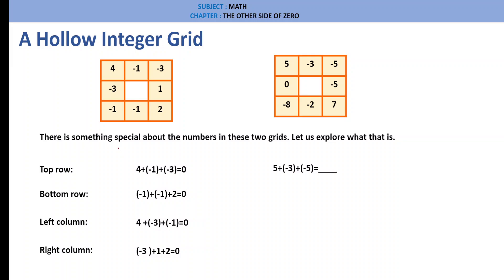Let us see the second grid. Top row: 5, minus 3, minus 5 — that is minus 3. Bottom row: minus 8, minus 2, plus 7 — that is minus 3. Left column: 5, plus 0, plus minus 8 — that is minus 3. Right column: minus 5, plus minus 5, plus 7 — that is minus 3.